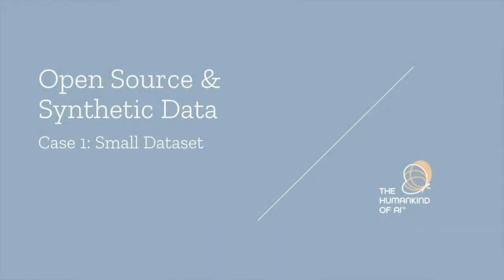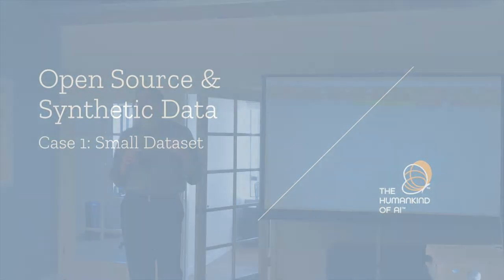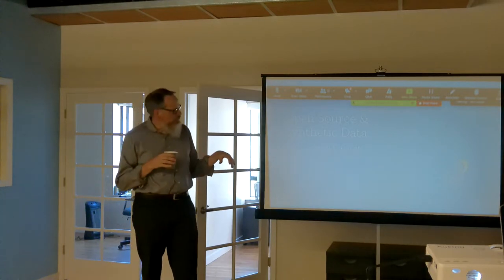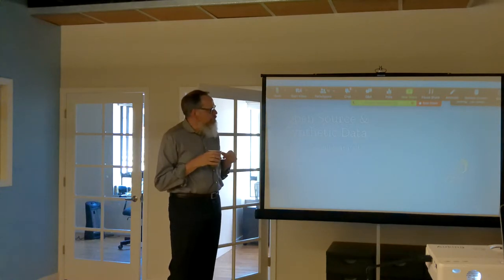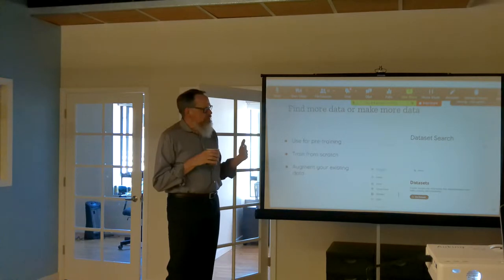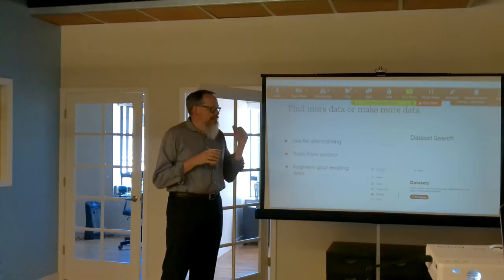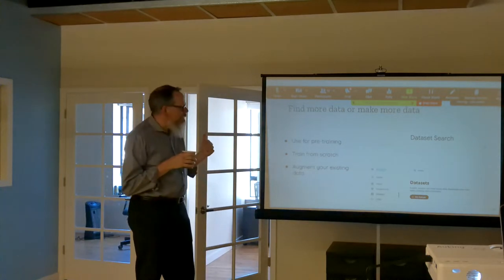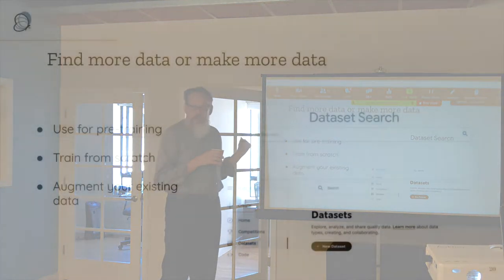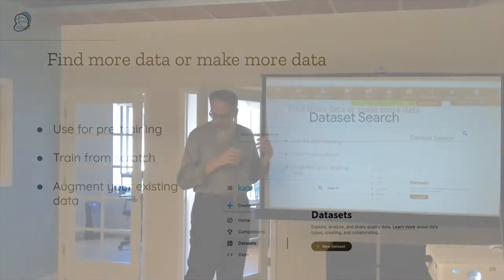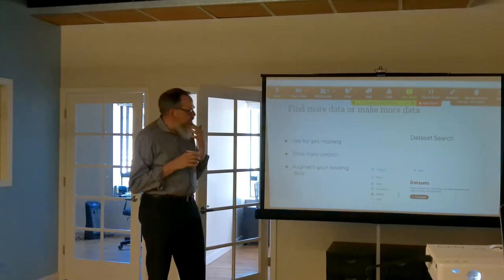Next topic: still thinking about small data sets, but now we're going to try to actually find more data or build it. Google has a dataset search option that's great. When I teach machine learning classes students use it to find projects by searching keywords. You can use datasets found online for pre-training, find something that's exactly what you need and train from scratch, or add it to your existing data. There's also Kaggle, which has a tremendous number of datasets, many representing real-world business applications.